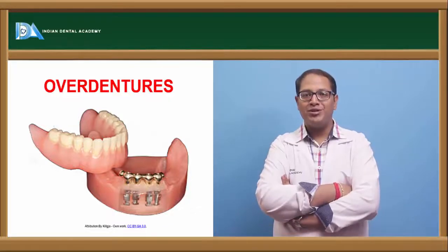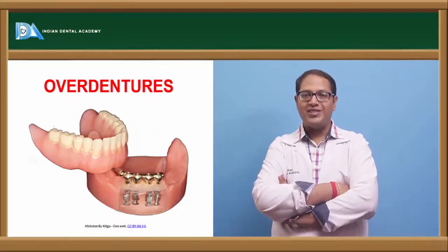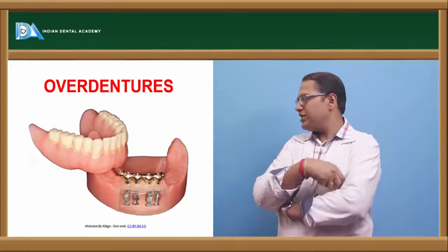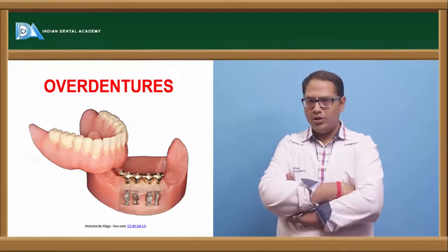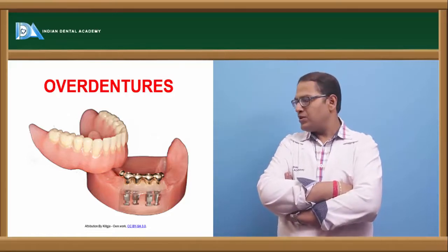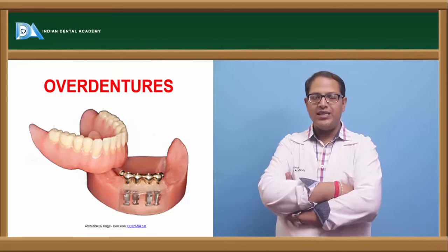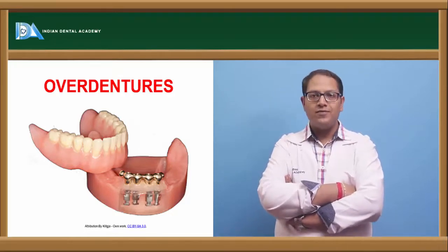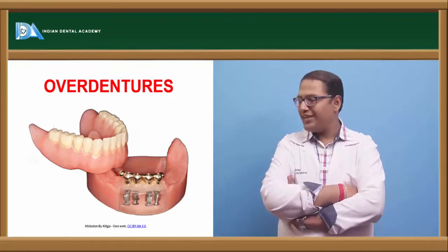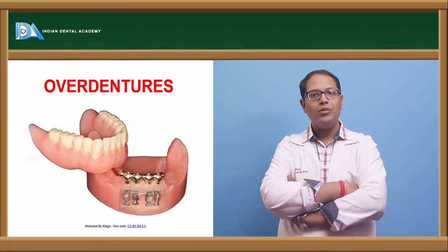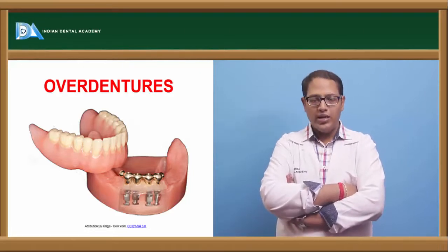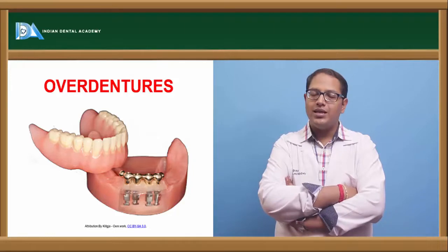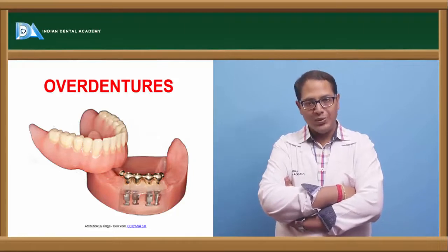Hello everyone. Now we will talk about overdentures. What is an overdenture? We can see in the picture something which is there below the denture. The denture is over something, and that is the reason it is called an overdenture. When the denture is over the ridge and something is there between, then that will be known as an overdenture.